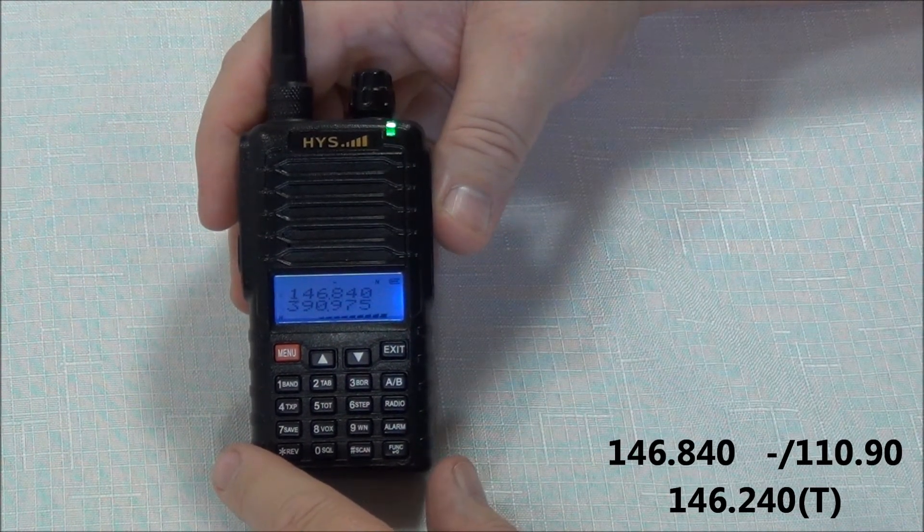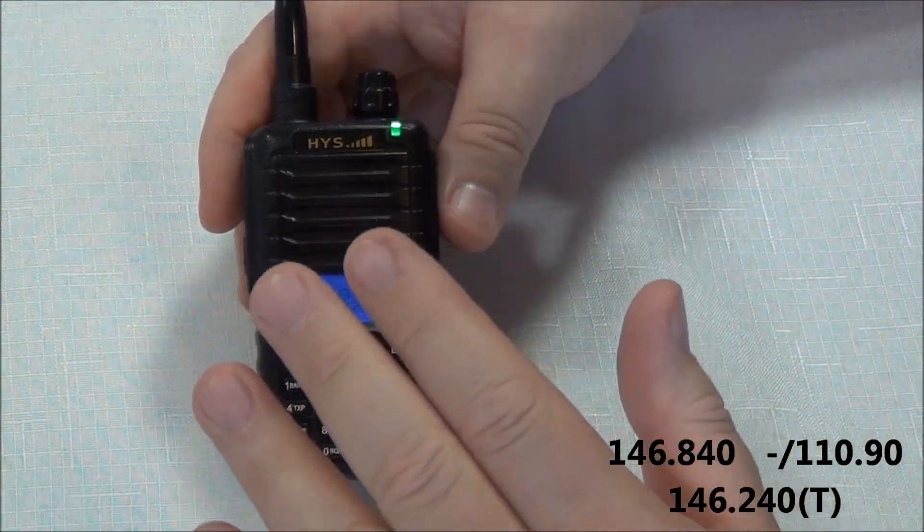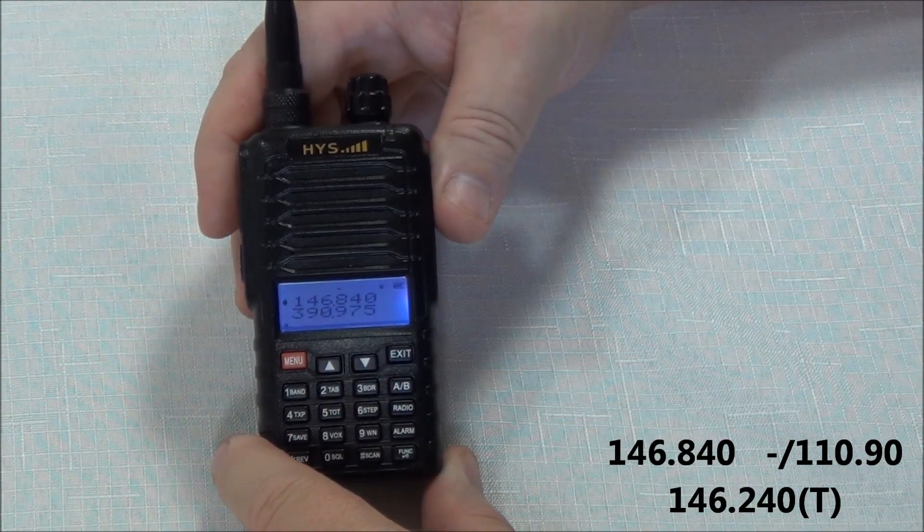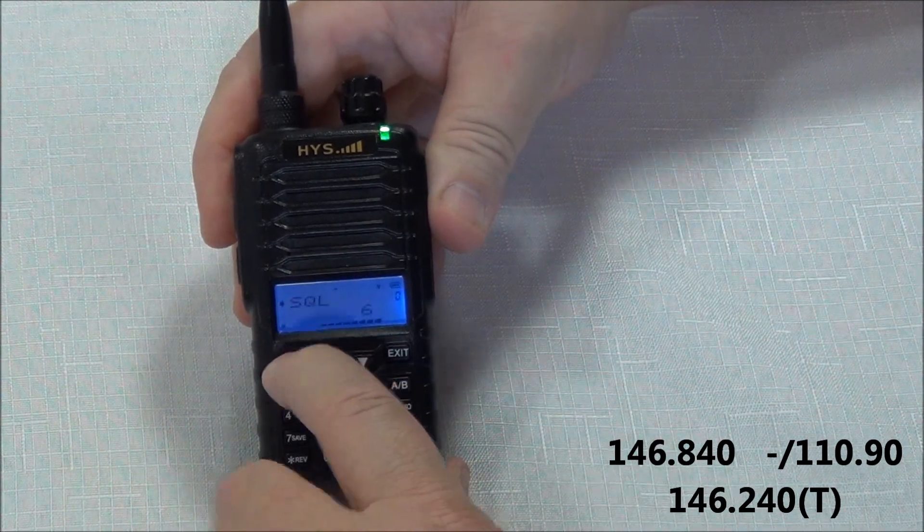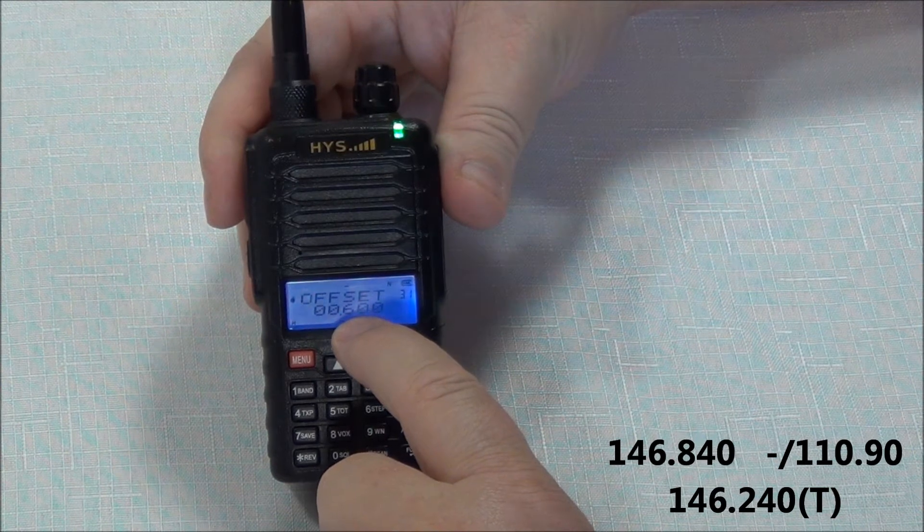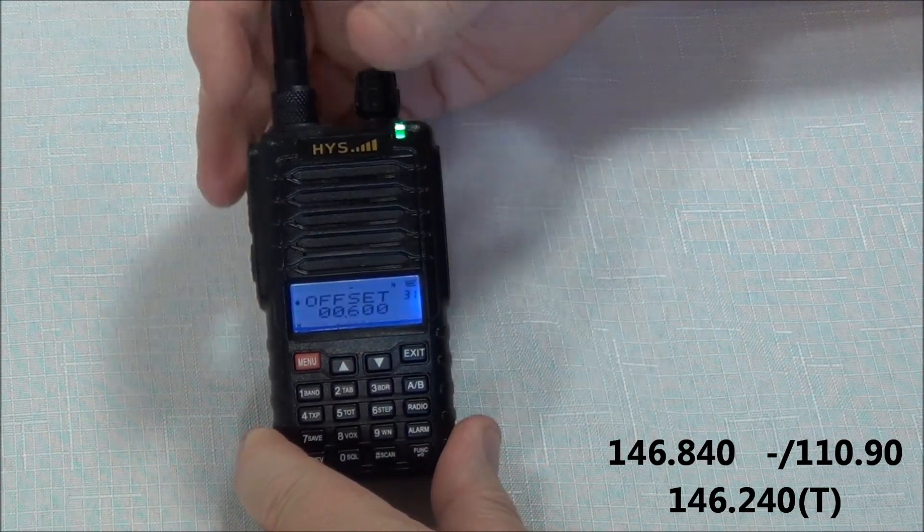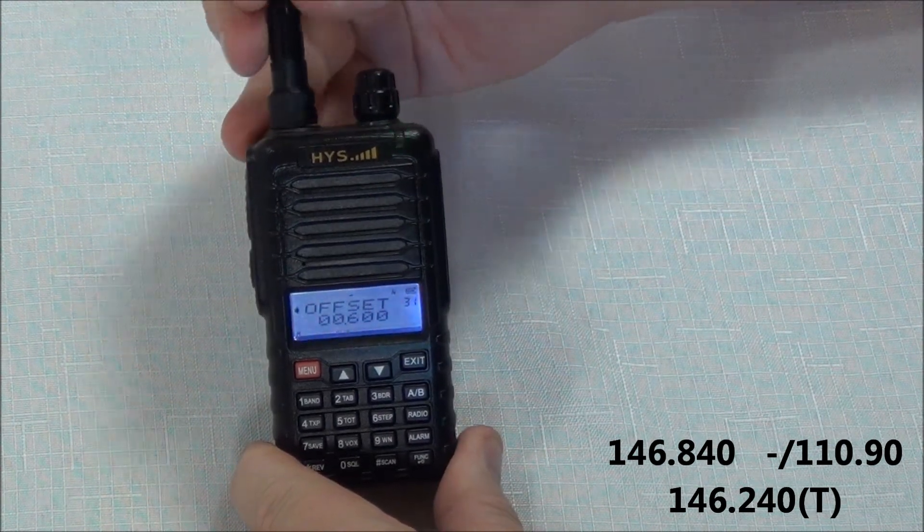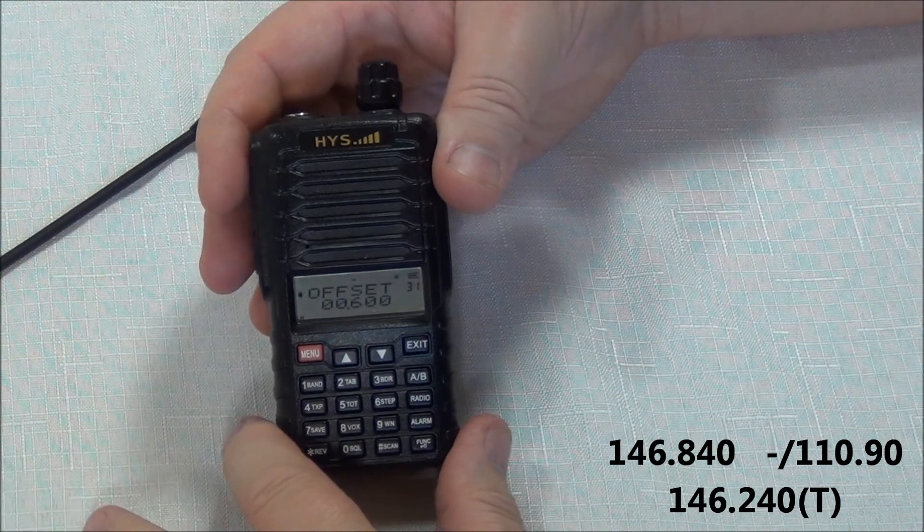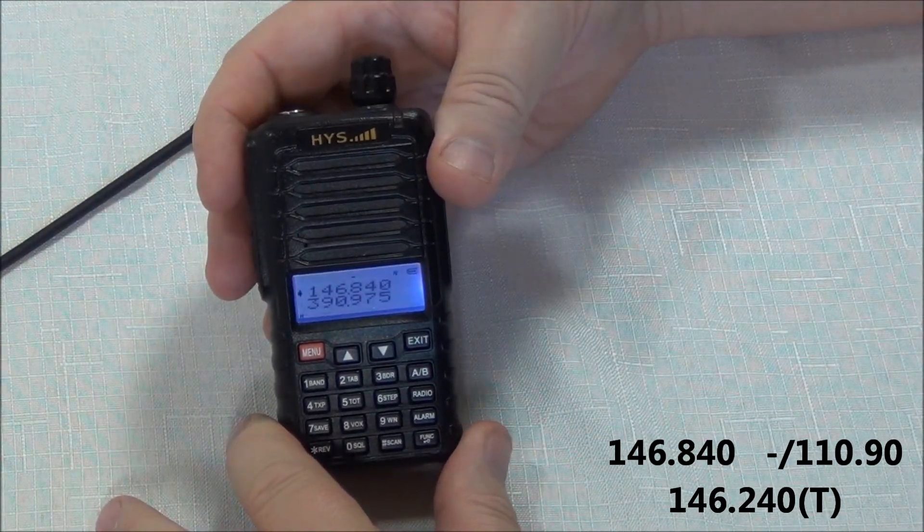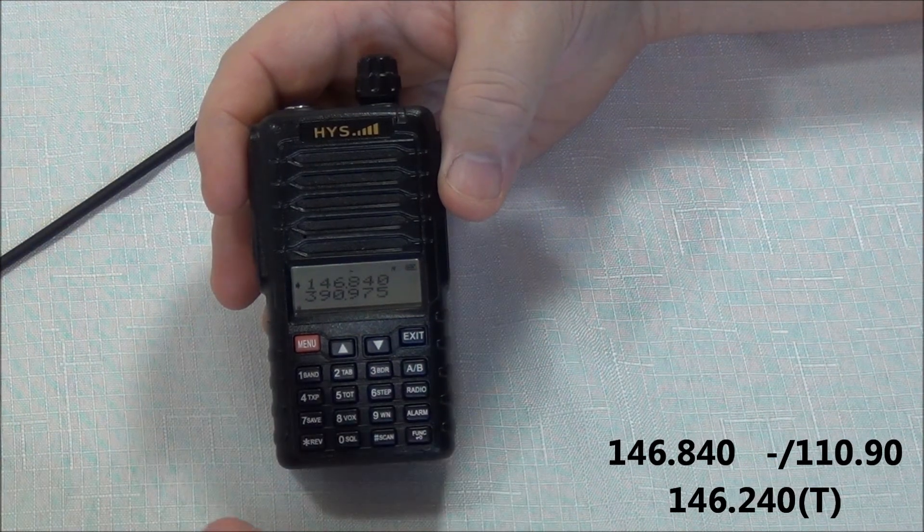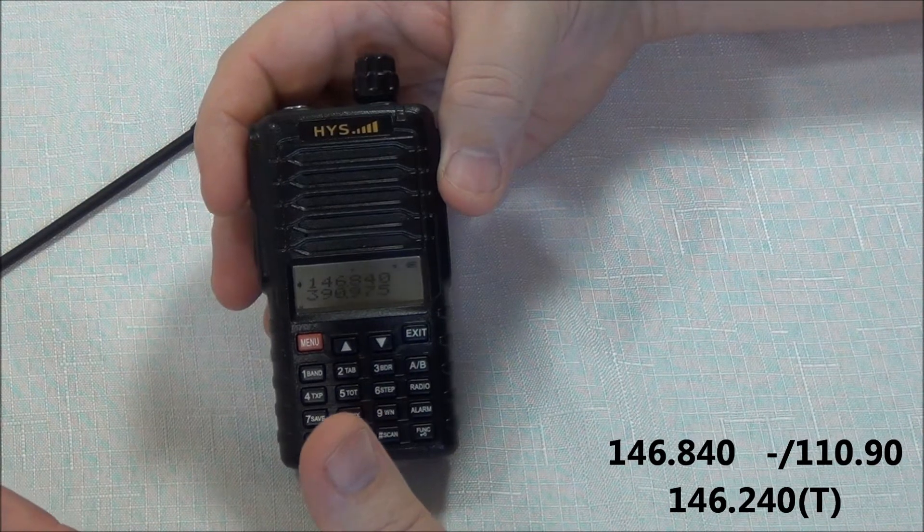All right, so the next thing we want to do is we want to talk about the offset. Now, the offset is how many kilohertz or hertz above or below this receive frequency you're going to use. And that's going to be in your menu option number 31. So let's go menu 31. Okay, and here's our offset. And you can see we are at 0.6 hertz or six kilohertz. Okay, we're receiving a lot of static here. You don't want to do this, but if we take this antenna off, we'll stop some of that static. And also once we program in the PL tone, you'll see the value of using that. That'll stop that static also. Okay, so now we've seen that the frequency is set at 146.840 and we know our offset is six kilohertz.